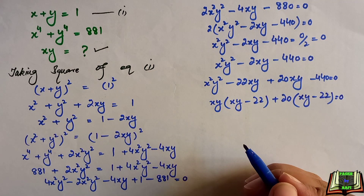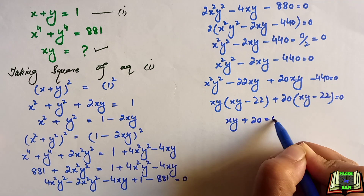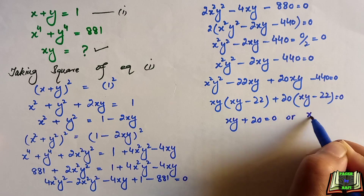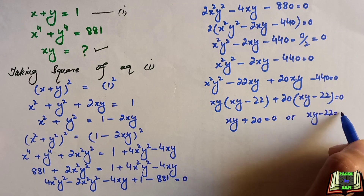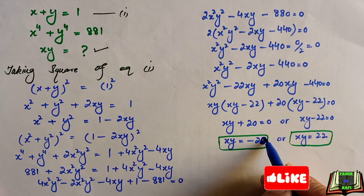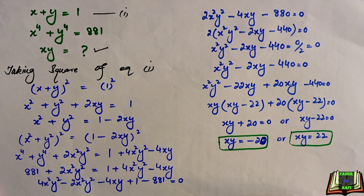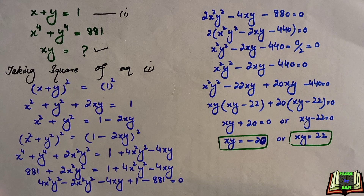This means xy plus 20 equals 0 or xy minus 22 equals 0, which leads us to xy equals minus 20 or xy equals 22. These are the values we had to find. I hope all of you understood. Practice more and more to be perfect. If you have any questions, write in the comment box. Thanks for watching.